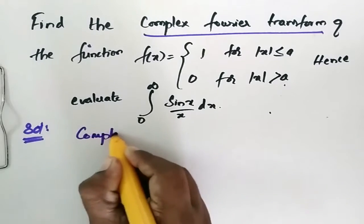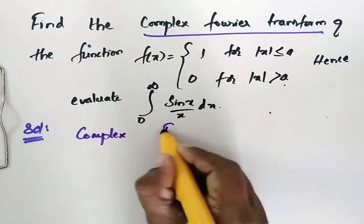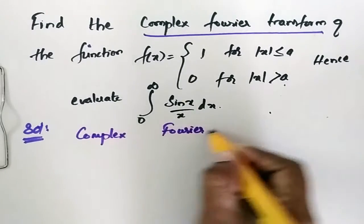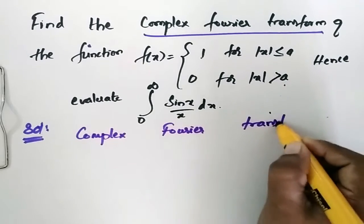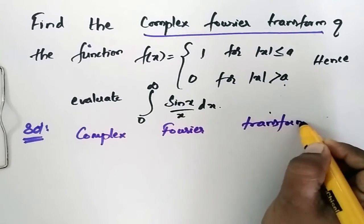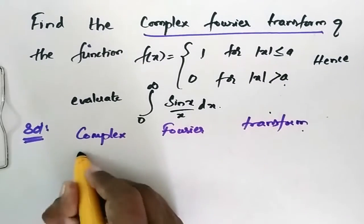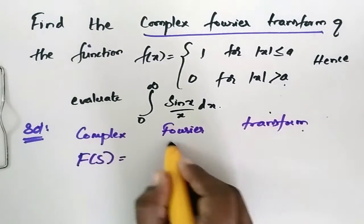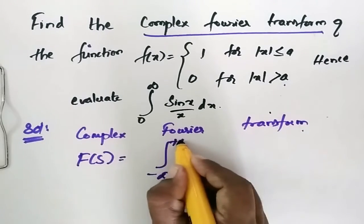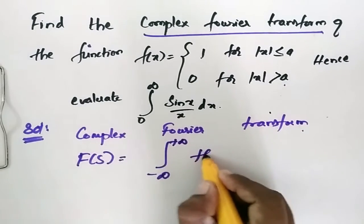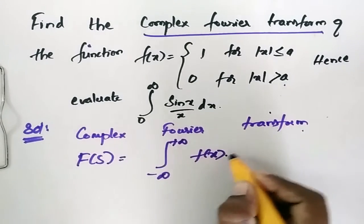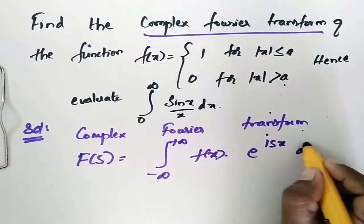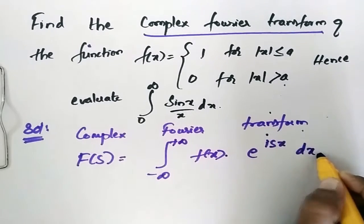The complex Fourier transform is defined as F(s) equal to the integral from minus infinity to plus infinity of f(x) e^(isx) dx.